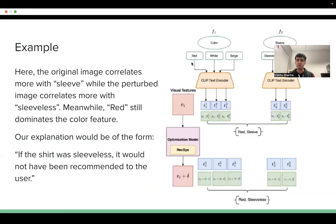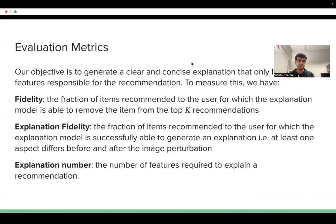This slide shows a simple example of CAVIAR in action. For evaluation, we use three metrics: fidelity, explanation fidelity, and explanation number. The first two metrics try to measure whether or not we are able to provide a suitable explanation for a large fraction of items in our dataset, while the third metric measures the conciseness of our explanation.